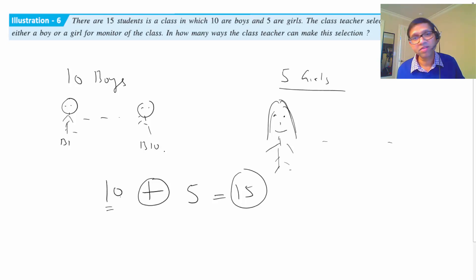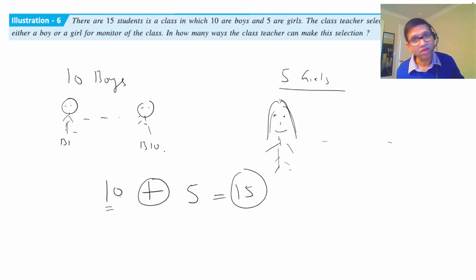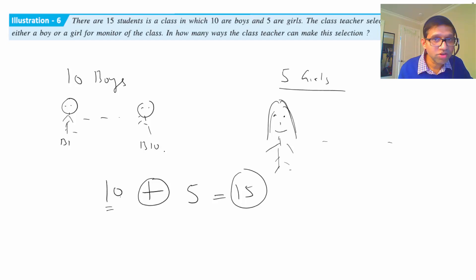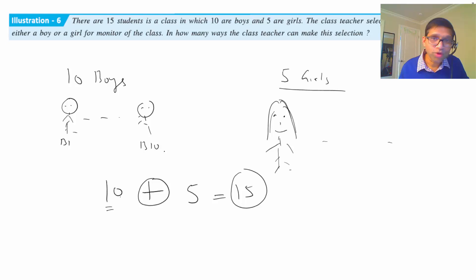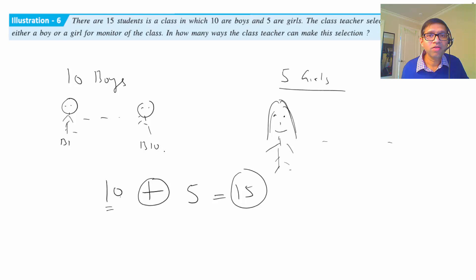This is the same as the previous example - either a man enters from the north side or from the east side, it's an OR relationship, so we add the ways. Similarly, either a boy will be monitor or a girl will be monitor, so the number of ways to choose a boy monitor is 10, number of ways to choose a girl monitor is 5, and we add the two because it's an OR relationship. There are 15 ways in which a teacher can decide to make a monitor.